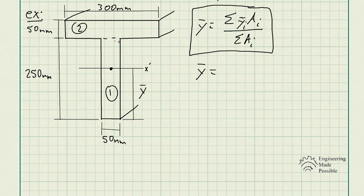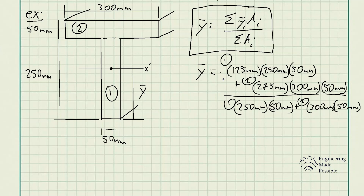First step: split up this geometry into its simpler components, so we have rectangle number one and rectangle number two. For the first area, we have the length being 250 millimeters and the width being 50 millimeters, so we have 250 times 50, which gives us the area of this rectangle.